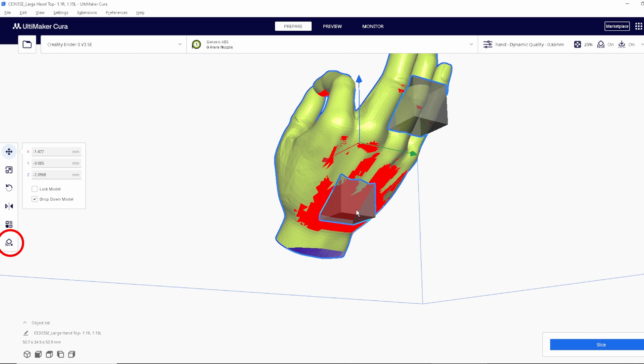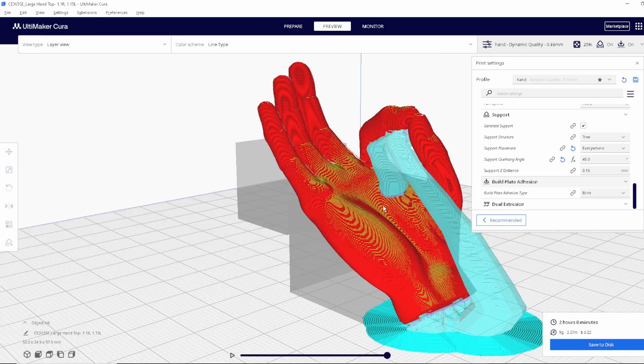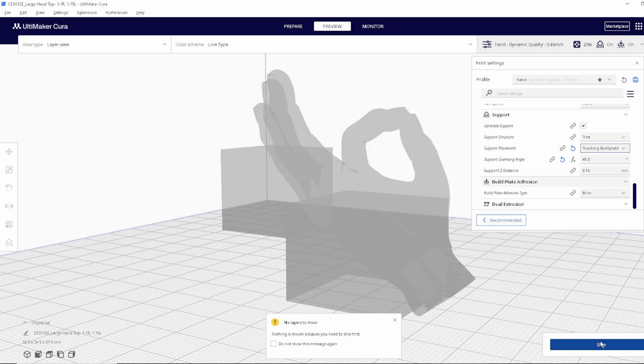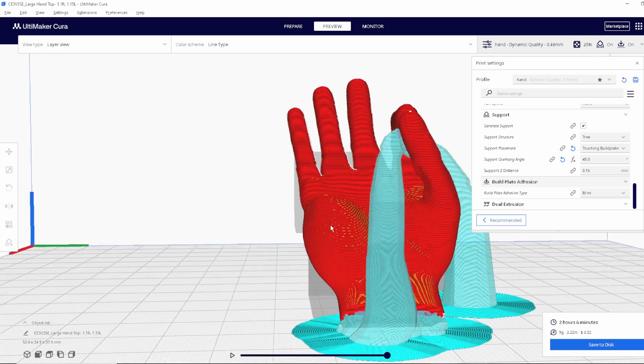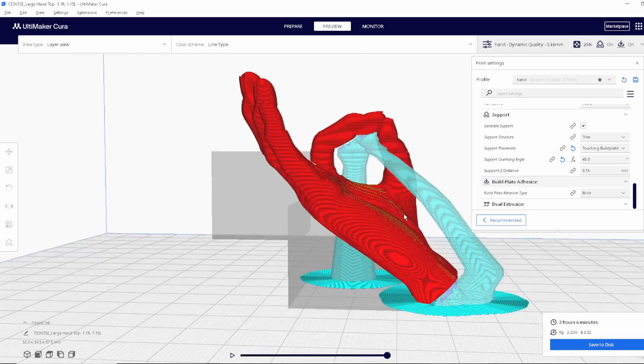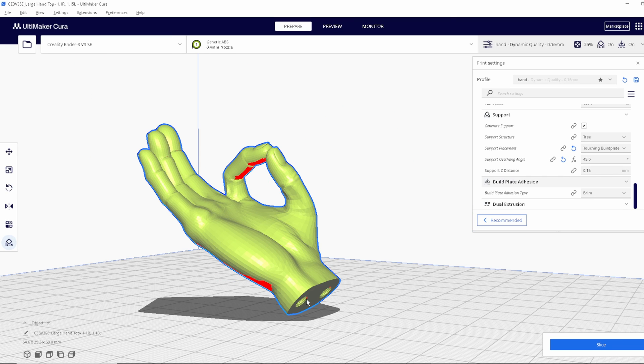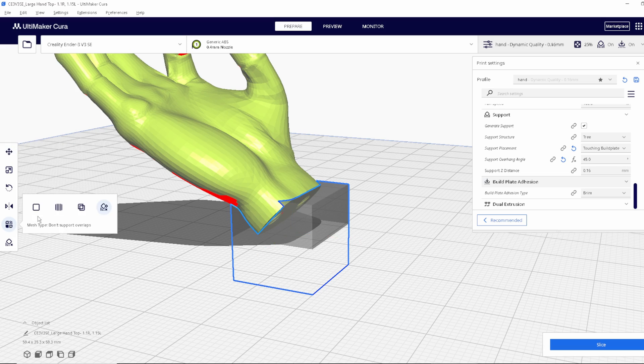Select the support blocker and click on any of the red areas where you don't want supports. If you have random supports extruding out the model itself, just change the support placement to touching build plate and that should take care of them. The only two places I want supports are at the base and under the two fingers. You can always place your own supports by using a support blocker and converting them into supports.